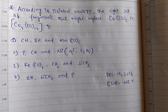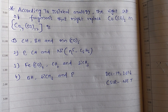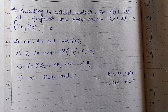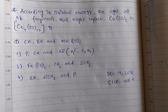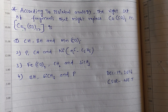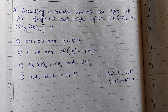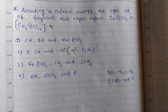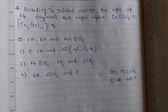Hi, this is Chiranjeevi. This question appeared in December 19, 2016 CSIR NET. Look at the question. According to isolobal analogy, the right set of fragments that might replace Co(CO)₃, that means cobalt tricarbonyl, in Co₄(CO)₂L complex is...